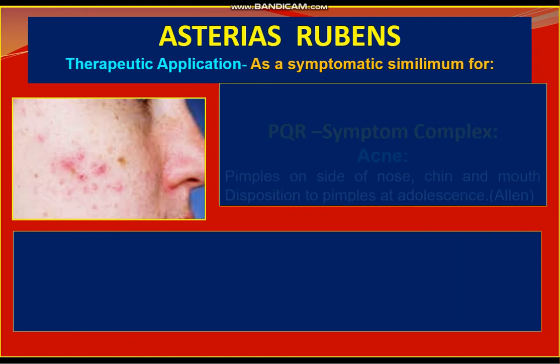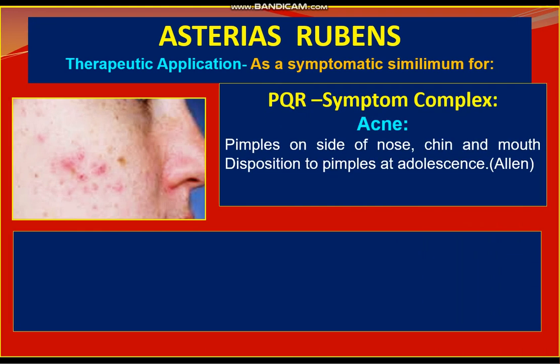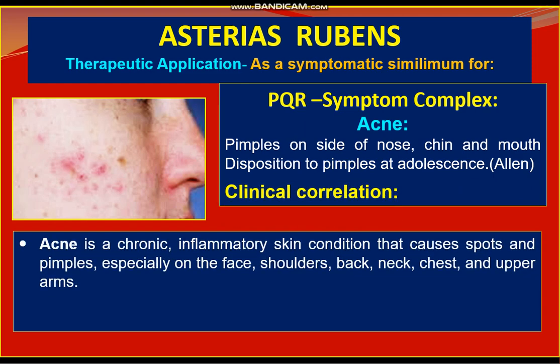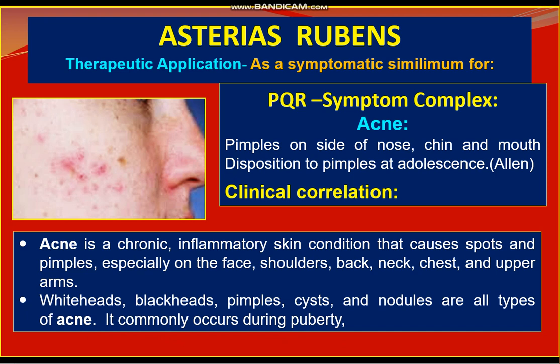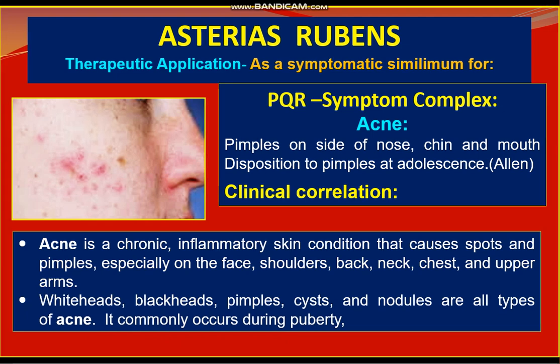The next clinical application is acne — pimples especially on the sides of the nose, chin, and mouth, with a disposition of pimples especially at adolescence. Acne is a chronic inflammatory skin condition that causes spots and pimples especially on the face, shoulders, back, neck, chest, and upper arms. Whiteheads, blackheads, pimples, cysts, and nodules are all types of acne, and it commonly occurs during puberty.